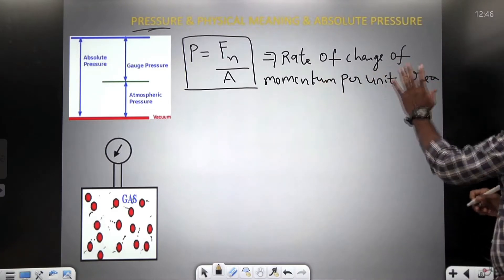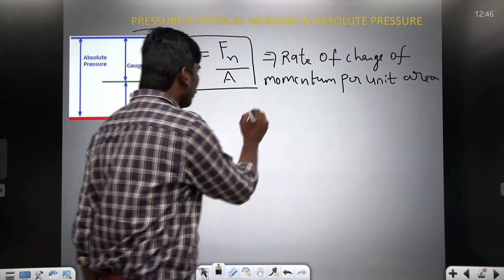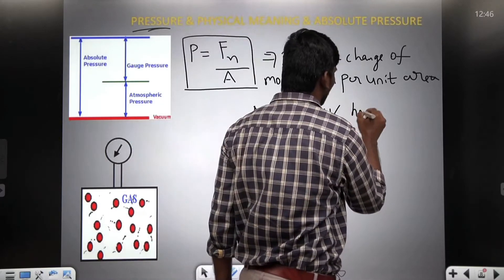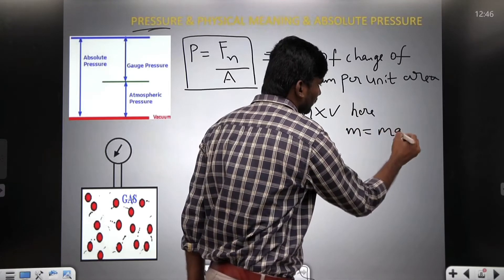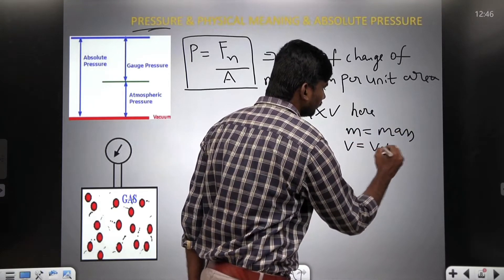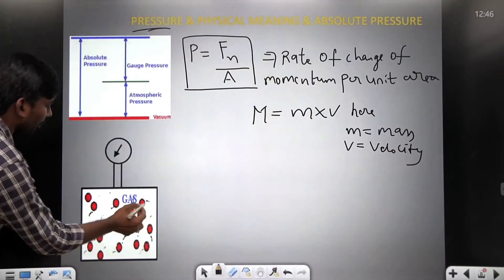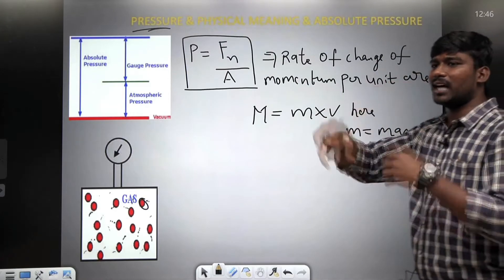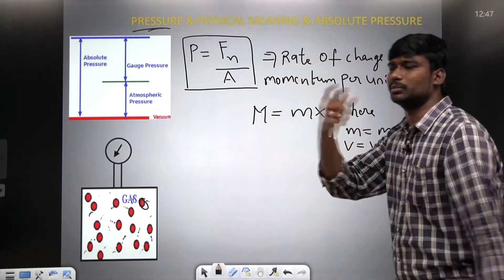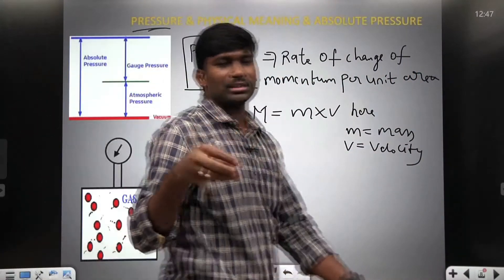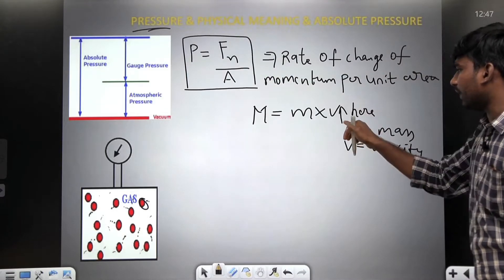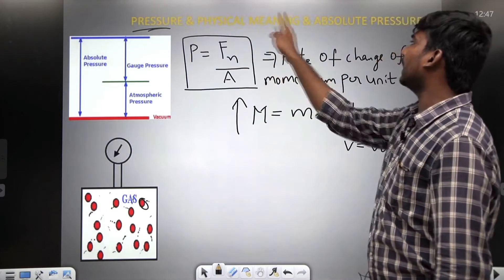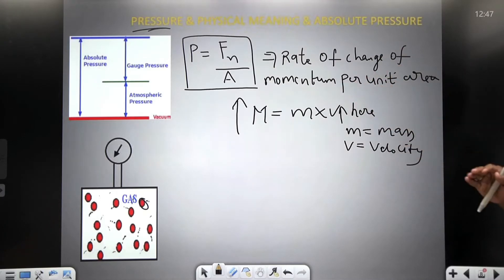Physical meaning of pressure is nothing but rate of change of momentum per unit area. Now, momentum m is equal to mass into velocity. Here m equals mass, v equals velocity. If I consider one gas molecule, for that gas molecule let us have some mass M. Whenever the mass of the gas particle is moving, it has some energy. Each molecule has some energy, and that energy refers to basically velocity. Whenever this velocity increases, momentum increases. So the physical meaning of pressure is rate of change of momentum per unit area.